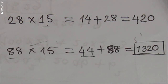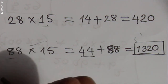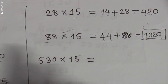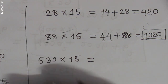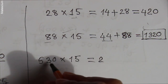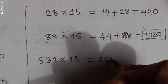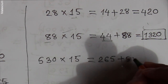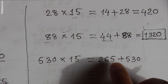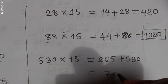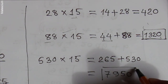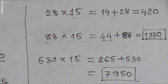Let's consider a larger number: 530 multiplied by 15. Do the same thing — half of 530 is 265. Plus 530 gives 795. Then place an additional zero here. Yes, 7950 is the answer of 530 times 15.